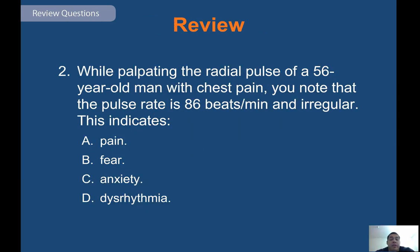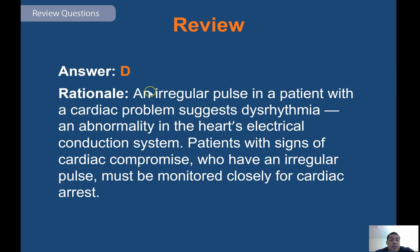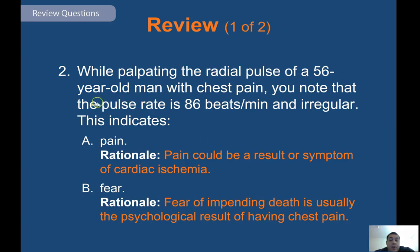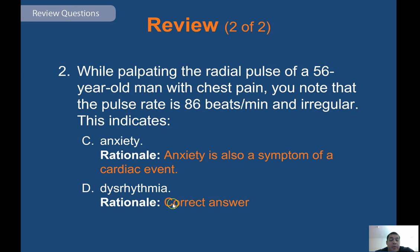When palpating the radial pulse of a 56-year-old male with chest pain and finding a rate of 86 beats per minute and irregular — this indicates dysrhythmia, an abnormality in the heart's electrical conduction system. Read the whole question carefully. Patients with cardiac compromise and an irregular pulse must be monitored closely for cardiac arrest. An irregular pulse in a cardiac patient suggests they may be in A-fib.